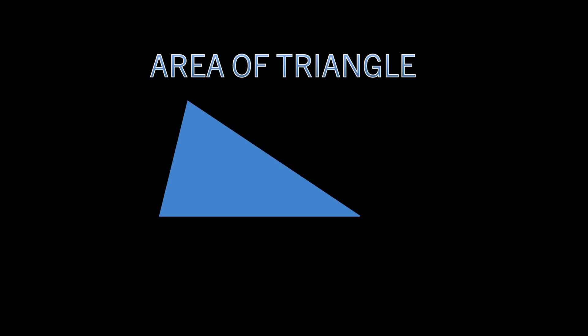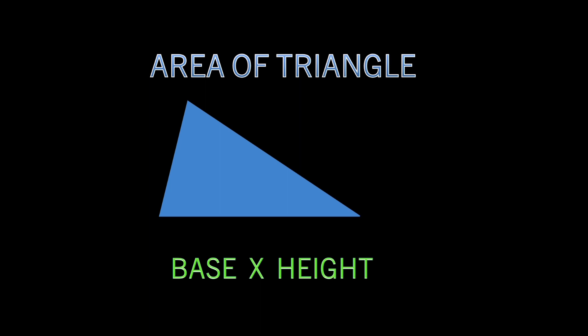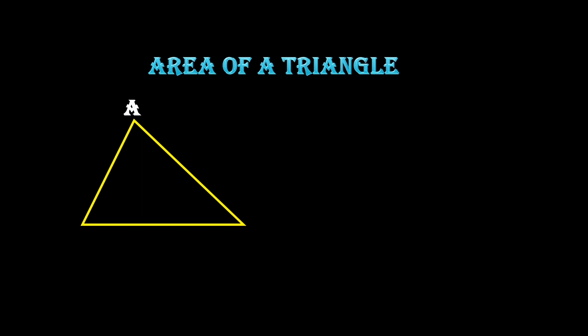Now let's discuss the area of a triangle. Any triangle is half part of a parallelogram. If we draw a diagonal in a parallelogram, it splits it into two congruent triangles with equal areas. Since the area of a parallelogram is base into height, the area of a triangle is half base into height.